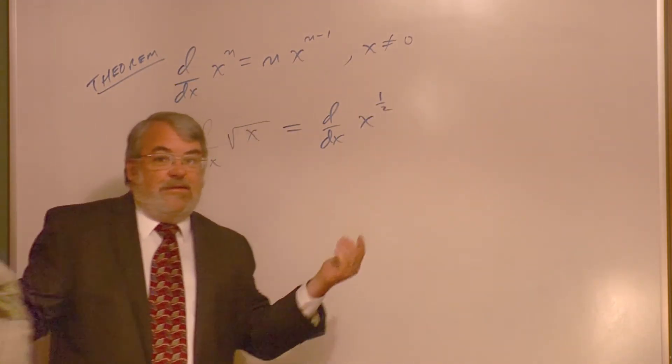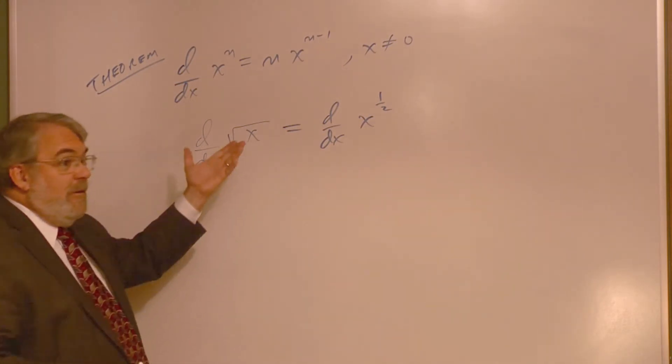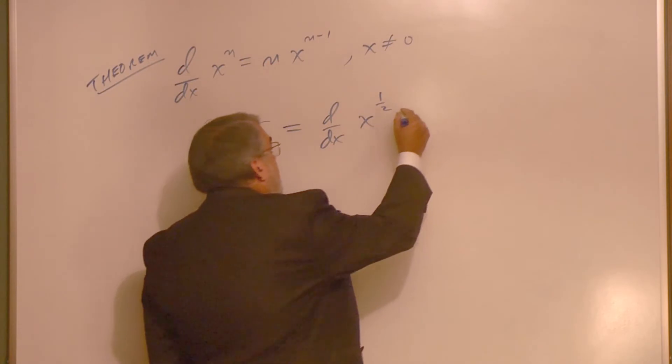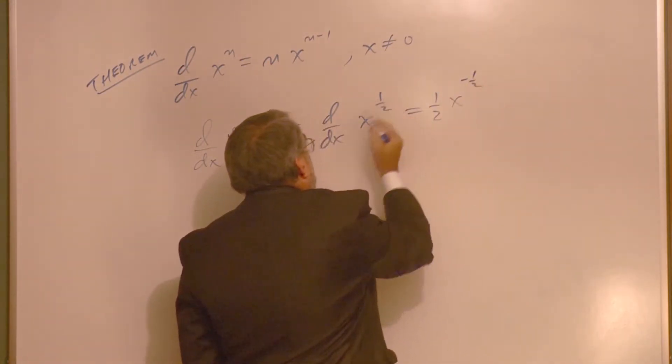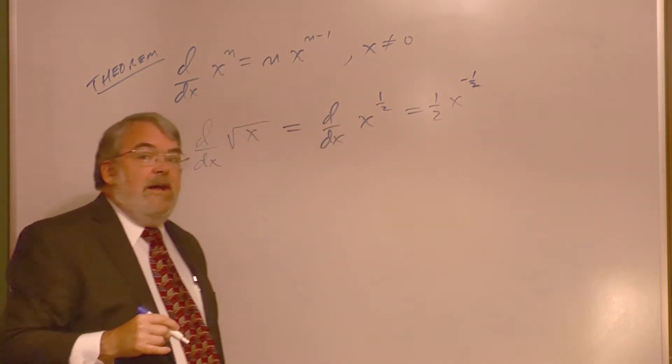This is the derivative of x to the 1 half. You're going to do this a lot, converting radicals to exponent form. So what's this derivative? It's going to be 1 half x to the minus 1 half, because 1 minus 1 half is minus 1 half.